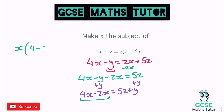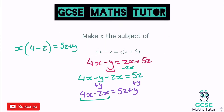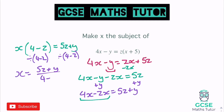And that equals 5z plus y. Finishing this question off — same process again — I'm just going to divide by this bracket, so this 4 minus z, divide by 4 minus z, and it will just go underneath as a fraction. So we'll have x equals 5z plus y over 4 minus z.